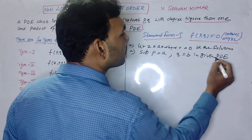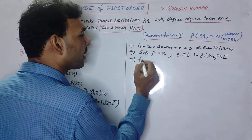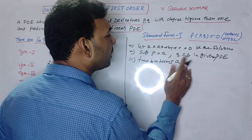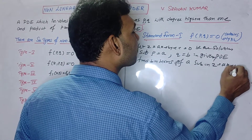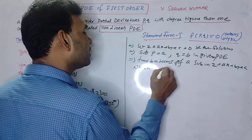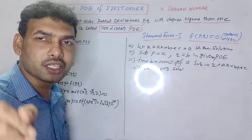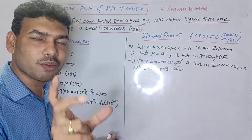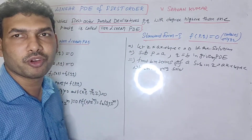Substitute a and b into the given PDE. From that, find b in terms of a. Then substitute the b value back into z equal to ax plus by plus c, which gives the required solution. So the steps are: assume z = ax + by + c, replace P with a and Q with b, solve for b in terms of a, and substitute back.